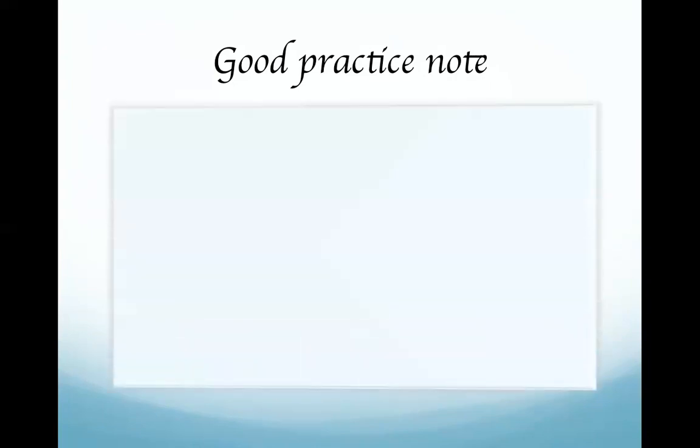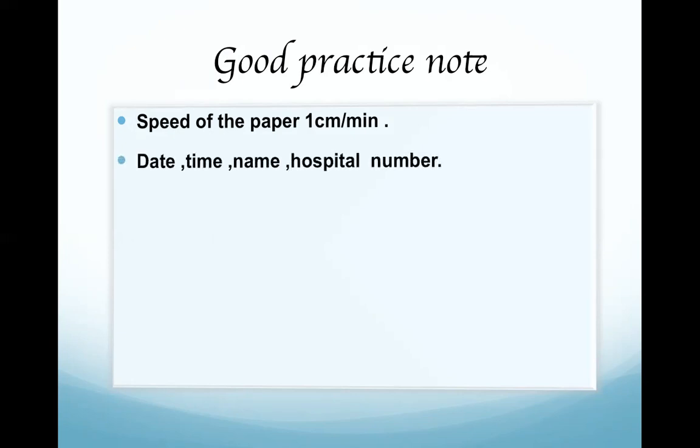When reading the CTG paper, you have to know the speed of the paper - whether it runs at one centimeter per minute or three centimeters per minute. At one centimeter per minute, you will be able to read the variability and decelerations more clearly. Documentation on the CTG should include date, time, name, and hospital number.